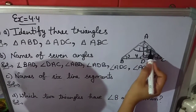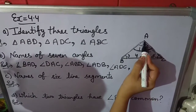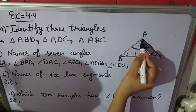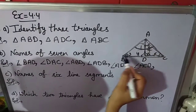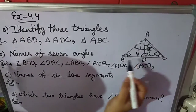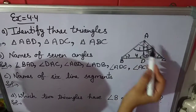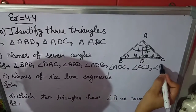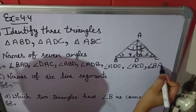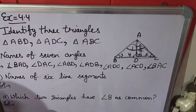Now angle 7. It is the complete angle — it means the full angle at A. So what are the arms of A? AB and AC, and the vertex is A. So angle 7 is angle BAC. So these are the 7 angles.